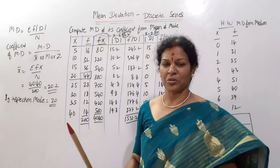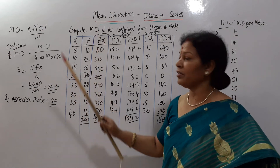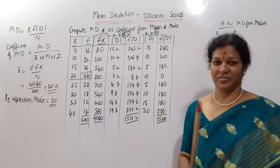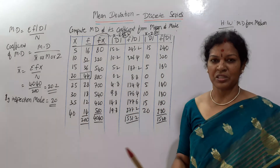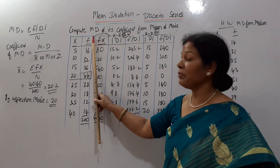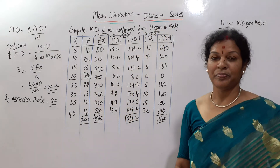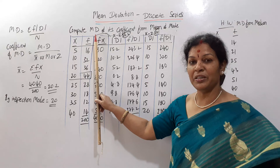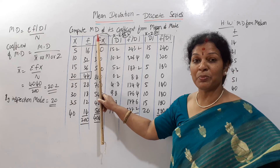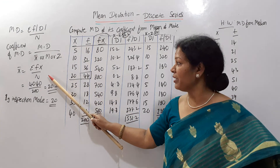The problem gives only x and f values. We have to compute mean deviation and its coefficient from mean and mode. First, mean deviation from mean — this is discrete series. To calculate the mean, the formula is: x-bar = sigma fx by n.